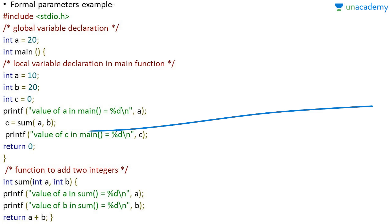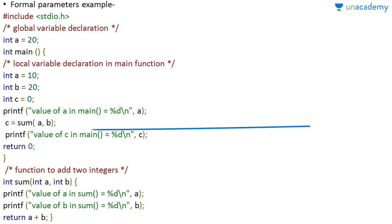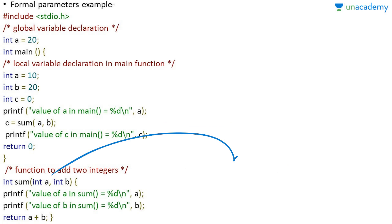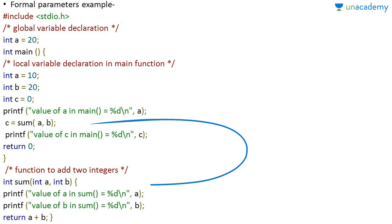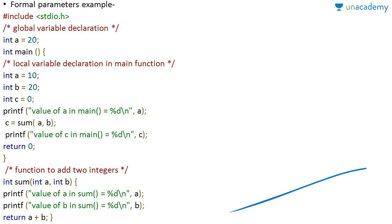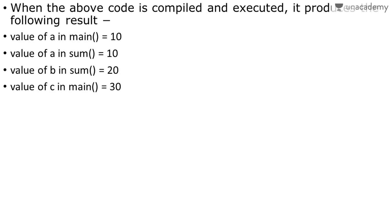There is also a term called actual parameters — these are the parameters we use when we call the function. When we write c = sum(a, b), a and b here are called actual parameters. The value of a is 10 and b is 20. When the function is called, execution goes to the function body where a will be 10 and b will be 20 — the formal parameters take the values of the actual parameters. We then print a in sum (10), b in sum (20), and return a + b which is 30.